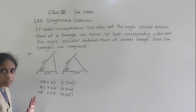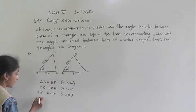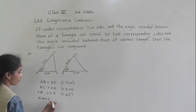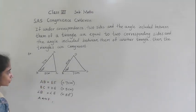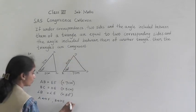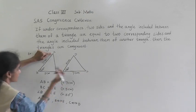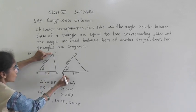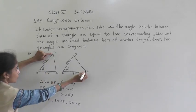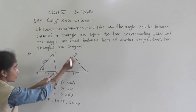Now we can show the corresponding parts: A corresponds to F, B corresponds to E, and C corresponds to D. AB is 7 cm so B corresponds to E, A corresponds to F, and C corresponds to D. So triangle ABC is congruent to triangle FED — because A corresponds to F, B corresponds to E, and C corresponds to D. Both triangles are congruent by SAS congruence rule.